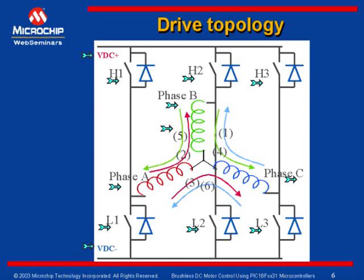Stator windings A, B, and C are connected in star fashion to this inverter. In the current slide, we will see how these stator windings are energized in synchronous with the Hall sensor input.